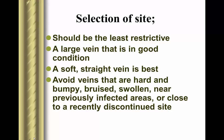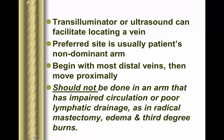We want to select the least restrictive and the largest vein in the best condition. Nice, soft, straight veins are best. Avoid veins that are hard or bumpy, bruised, swollen, near a previously infected area, or close to a recently discontinued site. Prefer the non-dominant arm if possible. Never use an arm with impaired circulation, poor lymphatic drainage, history of radical mastectomy, third-degree burns, or edema in that area.